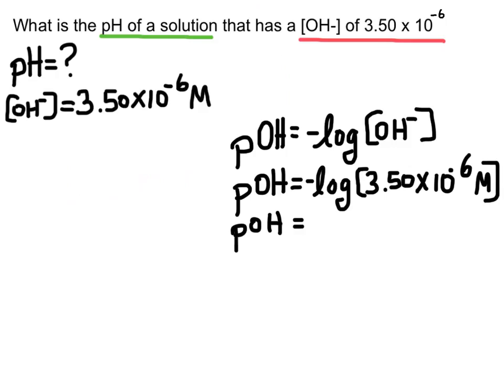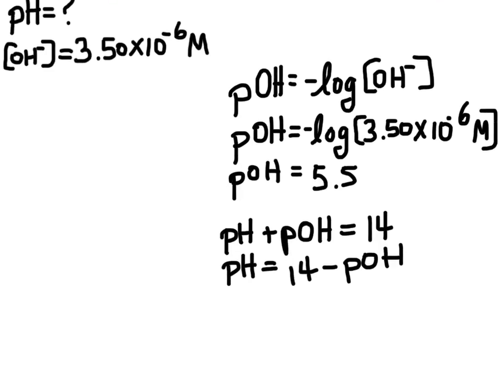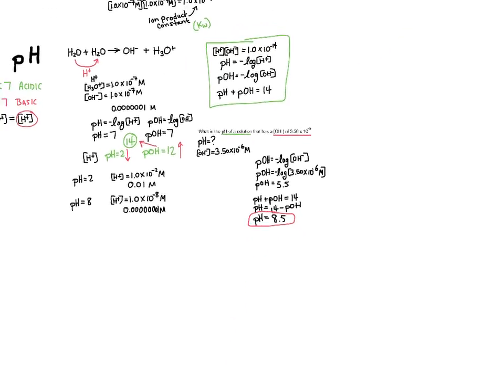We find that the pOH of this solution is going to be equal to 5.5. Now I can use the other equation. So pH plus pOH is always equal to 14. So I can solve for pH by just taking 14 minus the pOH, which I just found. And I get a pH of 8.5. And there's my final answer. And that's pH.